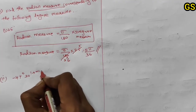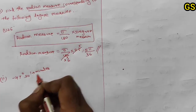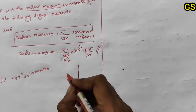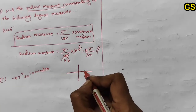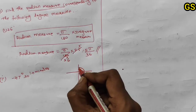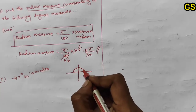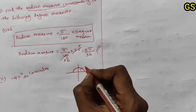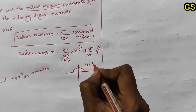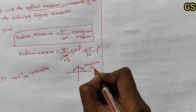Second subdivision: minus 47 degrees 30 minutes. The negative sign indicates direction — negative direction.